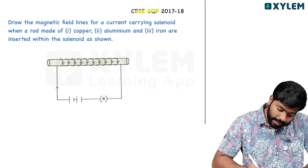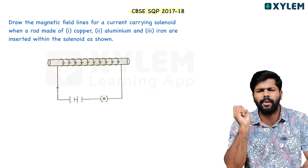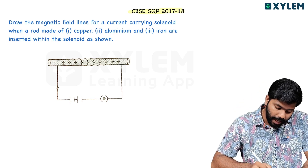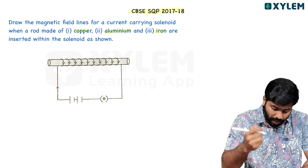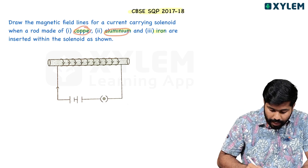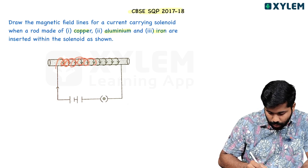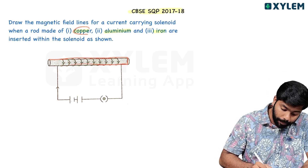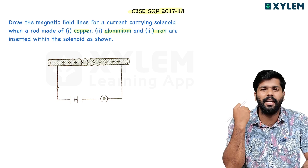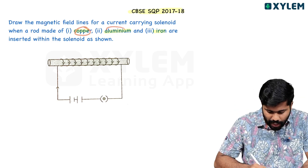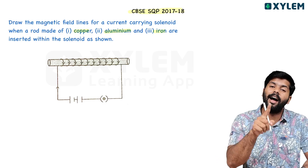From the CBSE Sample Question Paper 2017-18: Draw the magnetic field lines for a current-carrying solenoid when the core is made of copper, aluminium, and iron. Copper is a diamagnetic example — weakly magnetized in the opposite direction of the applied field. Aluminium is paramagnetic. Iron is ferromagnetic — strongly magnetized in the direction of the applied field.